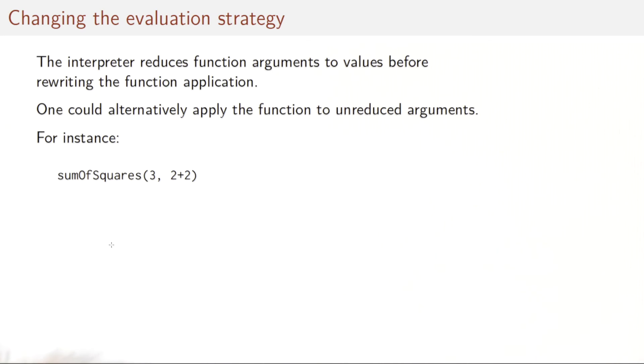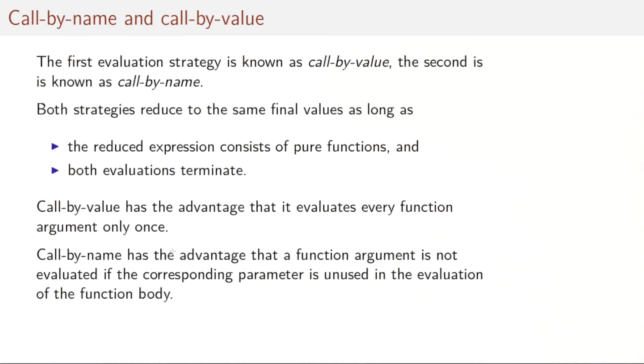We've seen that the Scala interpreter reduces function arguments to values before rewriting the function application. That's not the only possible reduction strategy. Alternatively, one could apply the function to unreduced arguments. For instance, we could start with sum of squares three, two plus two, and then go on as follows. We keep the right-hand side, we don't reduce this to four, and we simply pass it as an expression to the square function. We then simplify the right-hand side as before, and then do the same thing again, pass the expression two plus two to this occurrence of square that gives two plus two twice in the multiplication. We then simplify it in two further steps to arrive at the final result, 25.